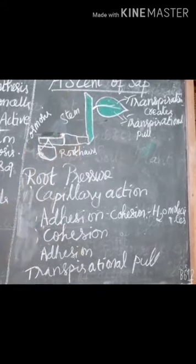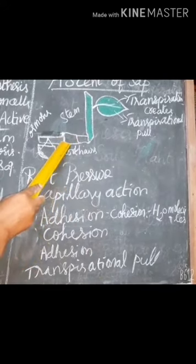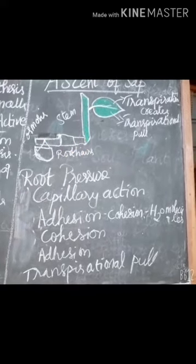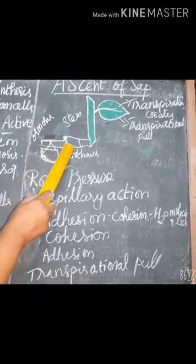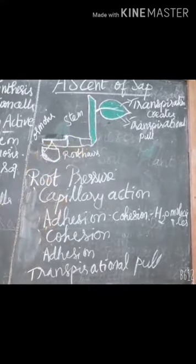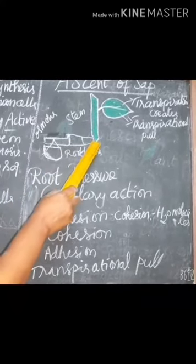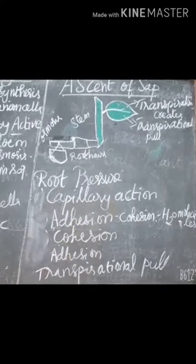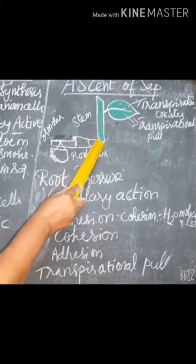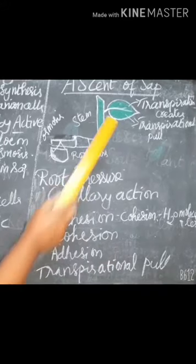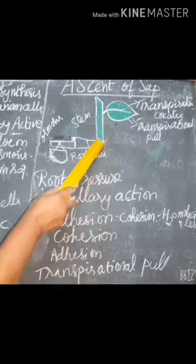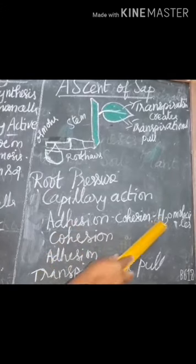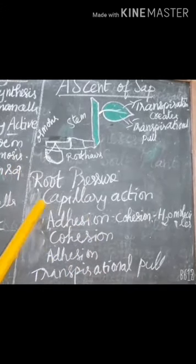Root pressure: water from soil enters the root hairs due to osmosis, so root pressure is responsible for the movement of water to the base of the stem. Capillary action: water or liquid rises in a capillary tube because of physical forces — this phenomenon is known as capillary action. Water forms a continuous column in the xylem because of the forces of adhesion and cohesion.